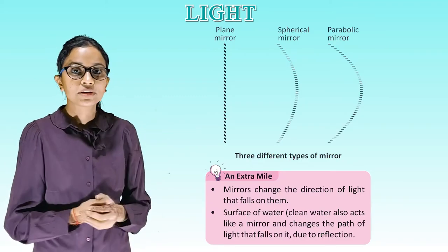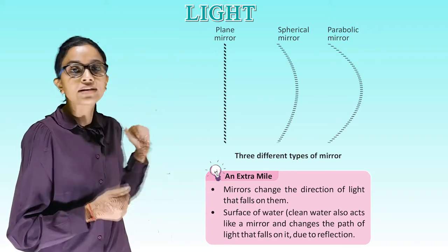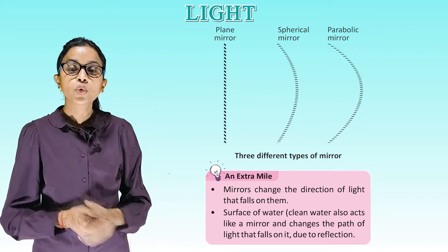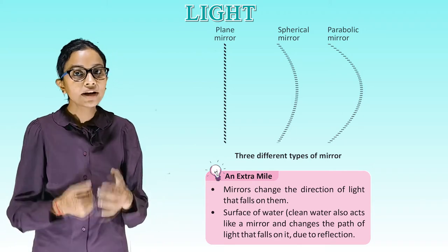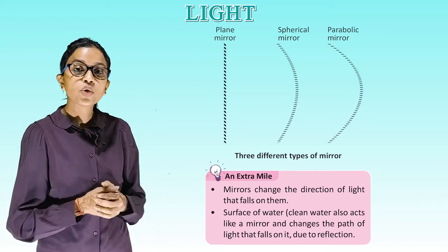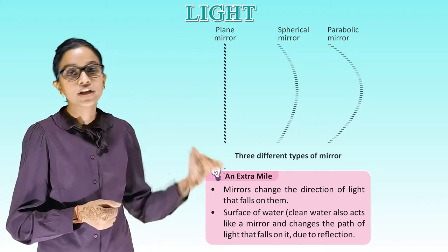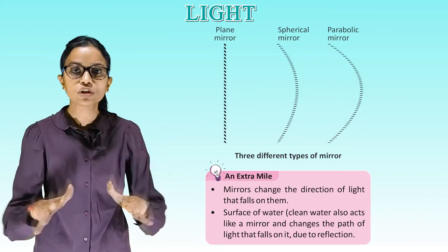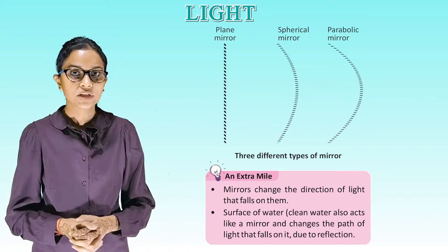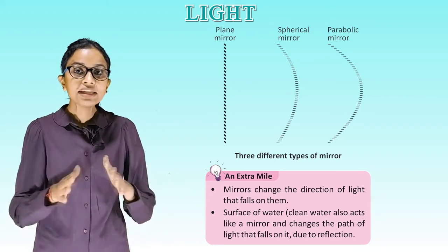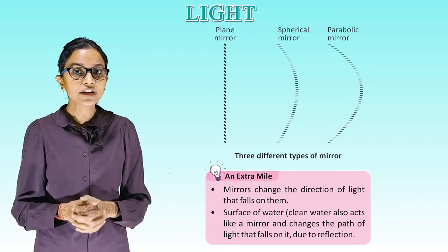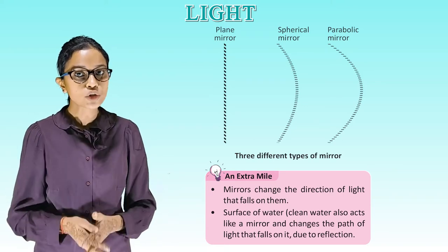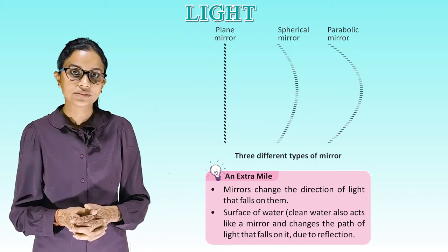A plane mirror is shown as a straight line. A spherical mirror is shown as a curved line. A parabolic mirror is shown with a deeper curve. Mirrors change the direction of light that falls on them. Clean water also acts like a mirror and changes the path of light that falls on it due to reflection.